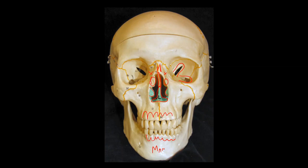Those are the alveolar processes of both the maxilla and the mandible. And here in front on the chin, I can see the mental foramen on the mandible.